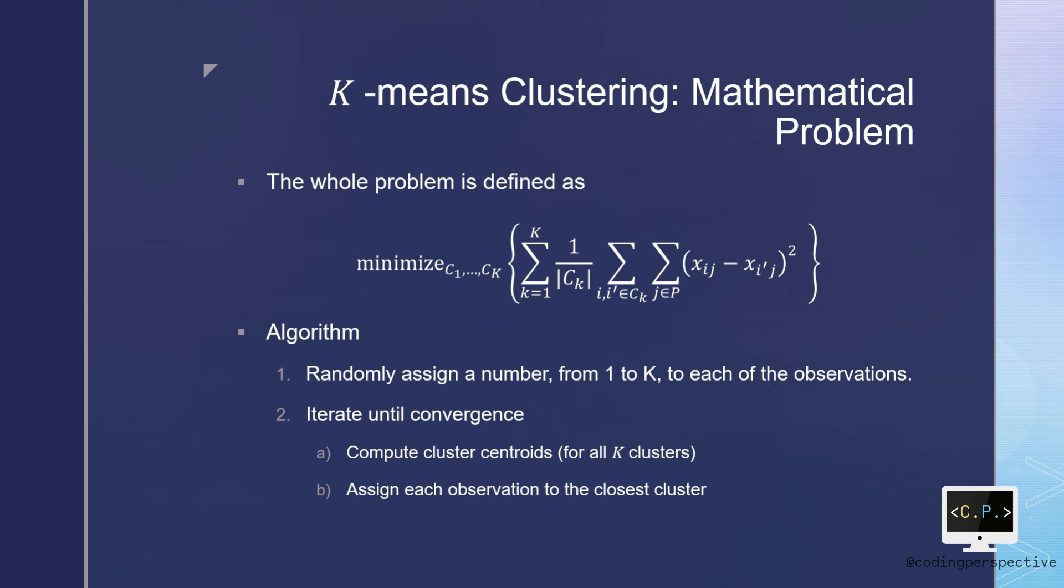In the second part, we start with iterating. We will iterate until convergence. In each iteration, we will compute the cluster centroid of each of the K clusters. Note that the kth cluster centroid is the vector of the p-feature means for the observations in the kth cluster.